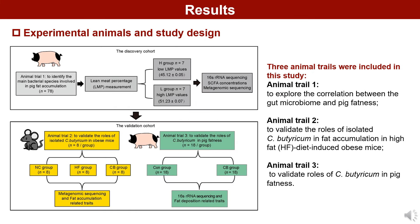In our study, three animal trials were included. Animal trial one was to explore the correlation between the gut microbiome and pig fatness. Animal trial two was to validate the roles of isolated C. butyricum in fat accumulation in high-fat diet-induced obese mice. And animal trial three was to validate the roles of C. butyricum in pig fatness.